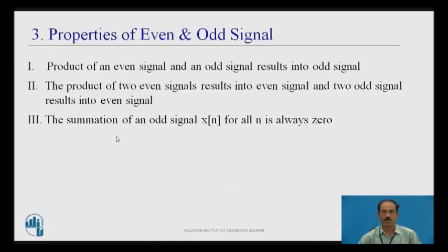Properties of even and odd signals: First, the product of an even signal and an odd signal results in an odd signal. Second, the product of two even signals results in an even signal, and the product of two odd signals results in an even signal. Third, the summation of an odd signal x(n) for all n is always 0.